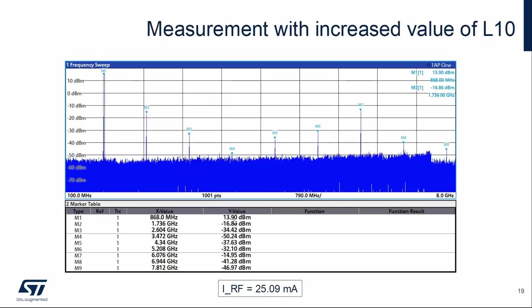Here is a measurement after increasing the inductor L10. The carrier is higher, about 13.9 dBm, and the current is about 25 mA, which are our target values.